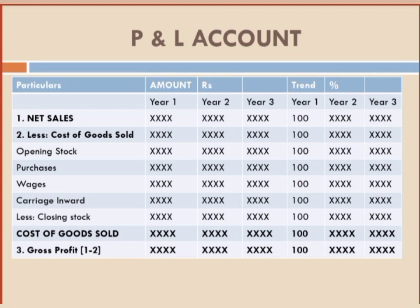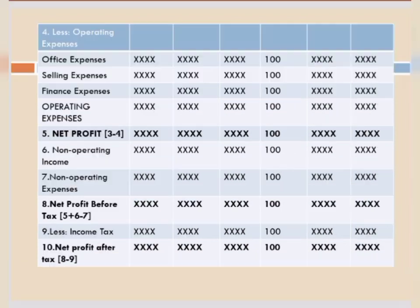First is net sales. We have to less cost of goods sold. Under cost of goods sold, the first item is opening stock, then we add purchases, then wages, then carriage. We add all of that, then we less the closing stock. After this, the value is termed as cost of goods sold. Net sales is Point 1 and cost of goods sold is Point 2. So 1 minus 2 — net sales minus cost of goods sold — the difference is called gross profit.